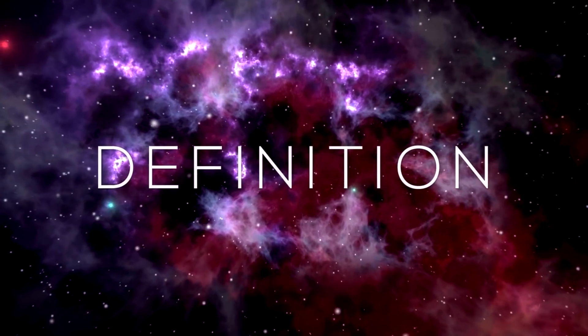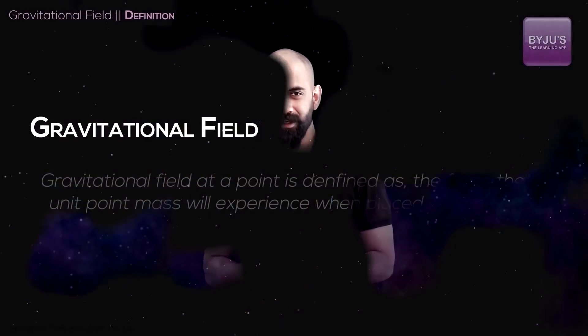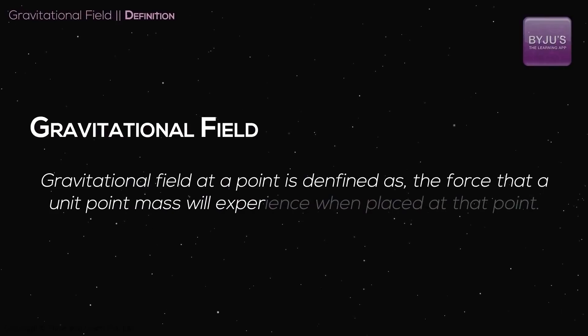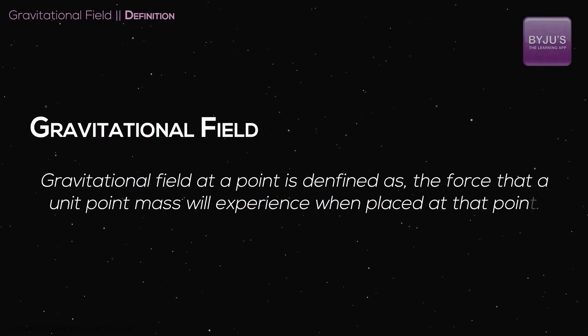So how do you quantify this change in character of a point in space? To quantify how a mass changes the character of a point in space, we introduce a new physical quantity called gravitational field. Gravitational field at a point is defined as the force that a unit point mass will experience when placed at that point. To find the gravitational field at a point, you place a 1 kg mass there and see what force it experiences — that is the field at that point.